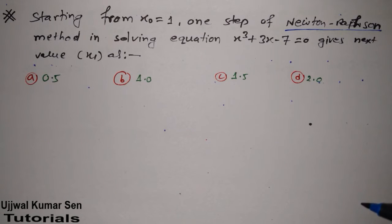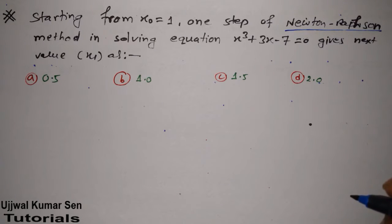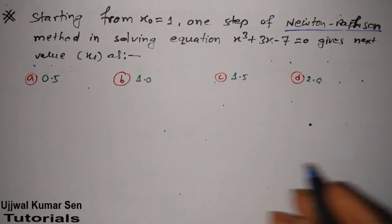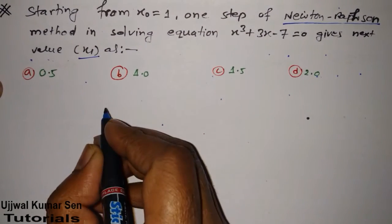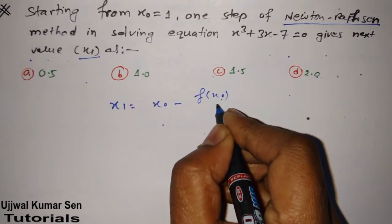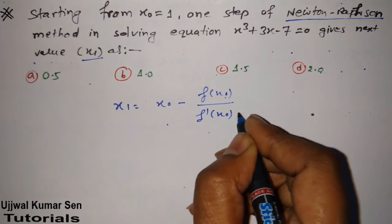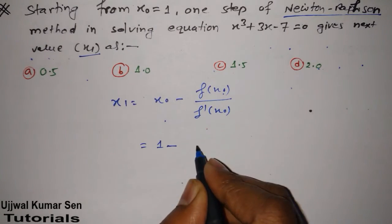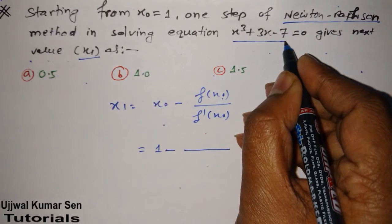So let's get started. The first question says: starting from x₀ = 1, one step of the Newton-Raphson method in solving the equation gives the next value x₁ as what? We have to find x₁, so I'll go directly to the formula: x₁ = x₀ − f(x₀) / f′(x₀). x₀ is already given as 1.